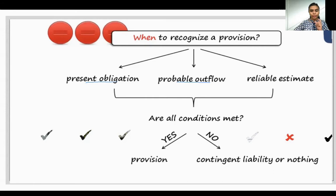What is this probability? It should be more than 50% possible outflow because of this obligation. So that is the second condition.